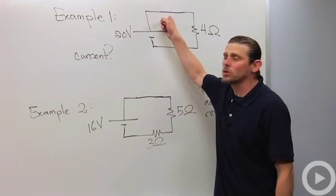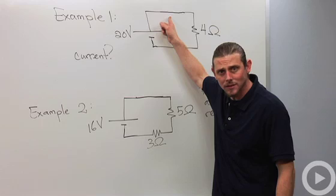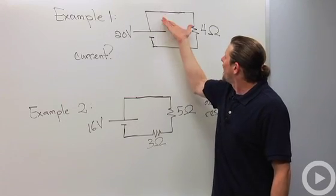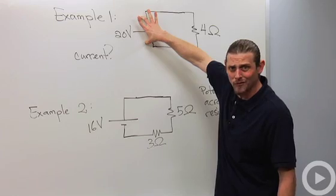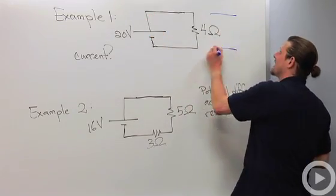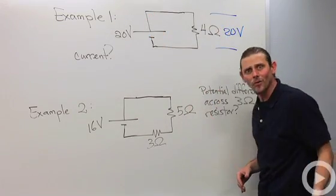That's what they represent. So that means that there can't be any potential difference across them. So if there's no potential difference across them, the potential difference here is 20 volts, then the potential difference here's got to be 20 volts.